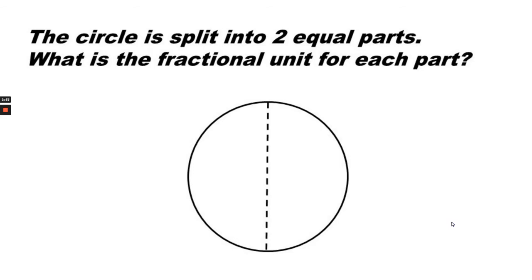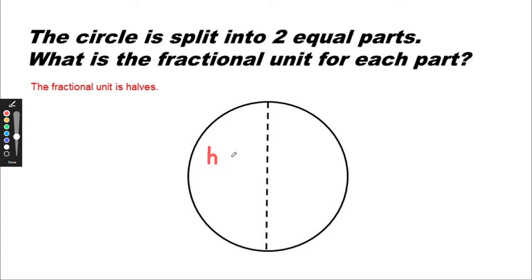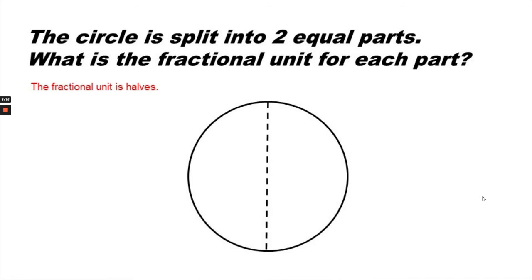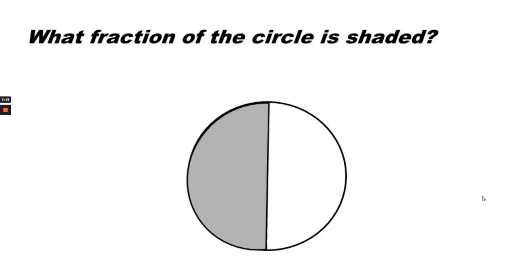The circle is split into two equal parts. What is the fractional unit for each part? The fractional unit is halves. Each part is a half and there are two halves. What fraction of the circle is shaded? One half of the circle is shaded.